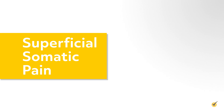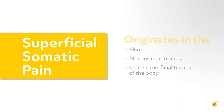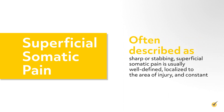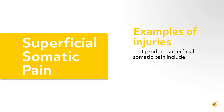Superficial somatic pain originates in the skin, mucous membranes, or other superficial tissues of the body, often described as sharp or stabbing. Superficial somatic pain is usually well defined, localized to the area of the injury, and constant. Examples of injuries that produce superficial somatic pain include lacerations, abrasions, and minor burns.